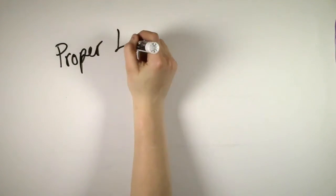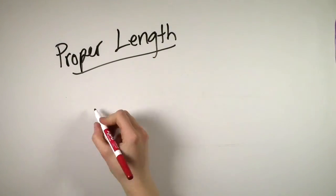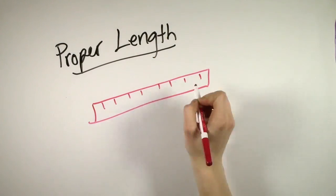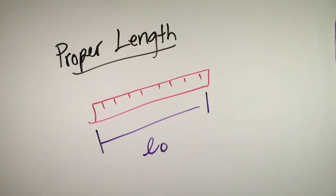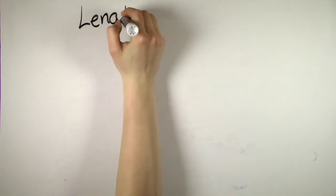Another term to define is proper length. The proper length of an object is whatever the object's length is in the frame that you are observing from. In classical mechanics, an object's proper length is just its length, but once things start moving close to the speed of light, things get a bit more complicated.